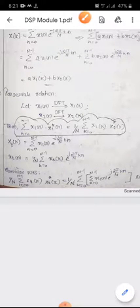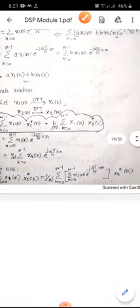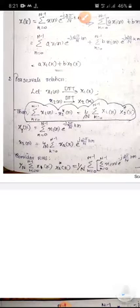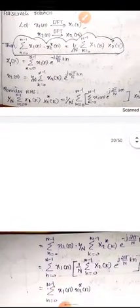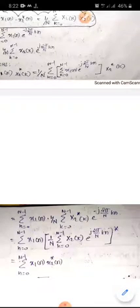So X1(K) is substituted by its DFT expression. Then X2*(K) is the conjugate of the IDFT summation. The right-hand side becomes: sigma N=0 to N-1 of X1(N) · (1/N) · sigma K=0 to N-1 of X2*(K) · e^(−j2π/N · K).